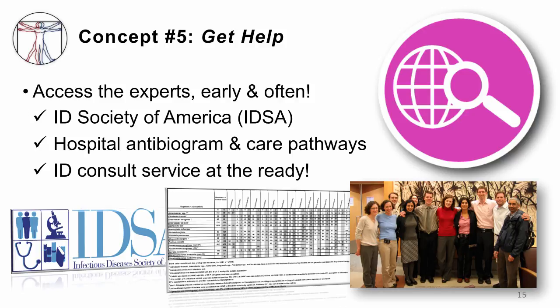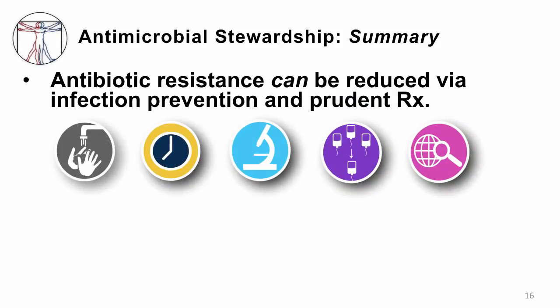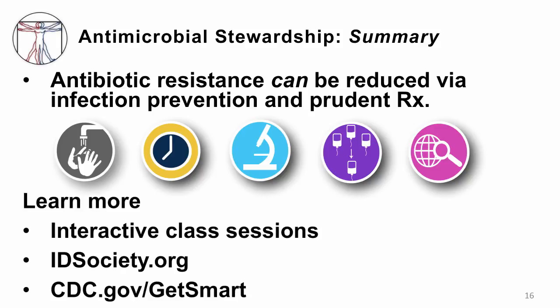After all, the bugs are constantly getting smarter — you have to get smarter too. In summary: antibiotic resistance can absolutely be reduced via infection prevention and the prudent use of antibiotics. The five simple strategies are: keep your hands clean, get the tubes out, make a diagnosis, trust that diagnosis and de-escalate, and access help from the experts. For more, we'll have interactive class sessions with case scenarios. You can also visit idsociety.org and cdc.gov/get-smart. Thank you for your attention.